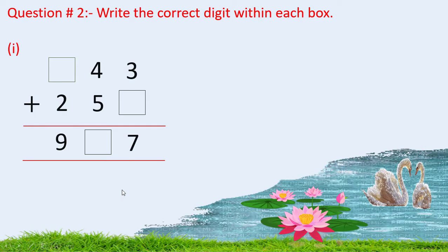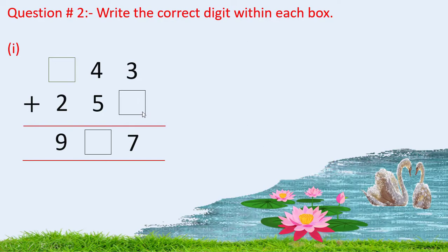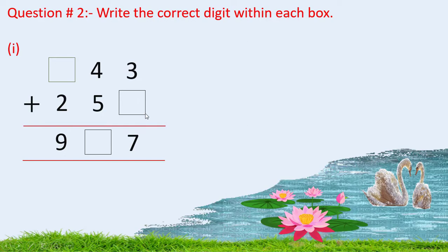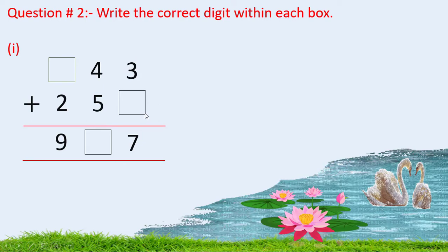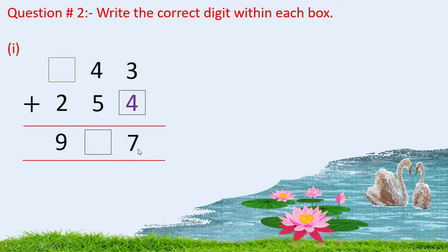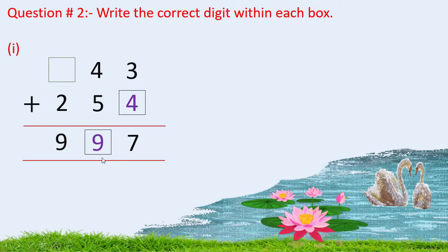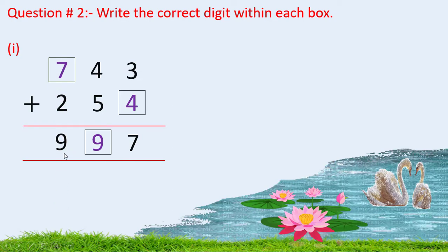Question No. 2: write the correct digit within each box. In the first part, think about what we have to write in the box so that we get 7. We need 4, because 3 plus 4 is 7. Now add 4 and 5, we get 9. What we have to write in this box so that we get 9? That is 7 plus 2 is 9.